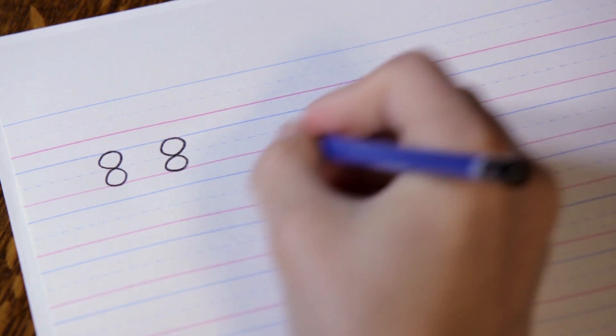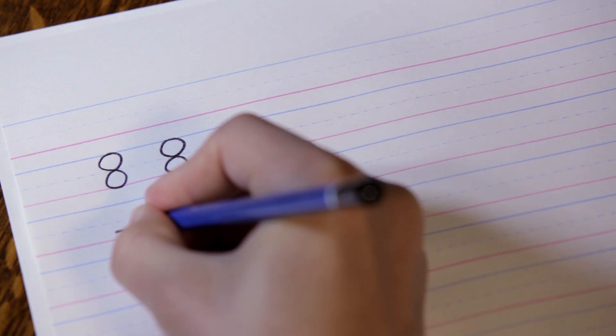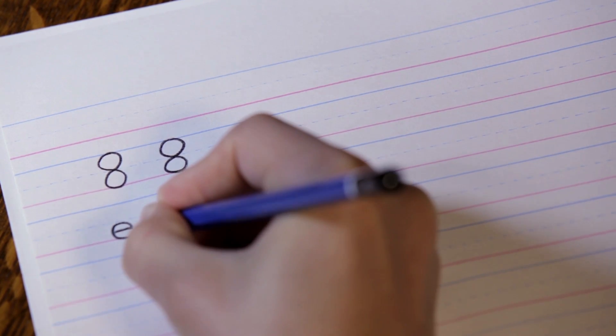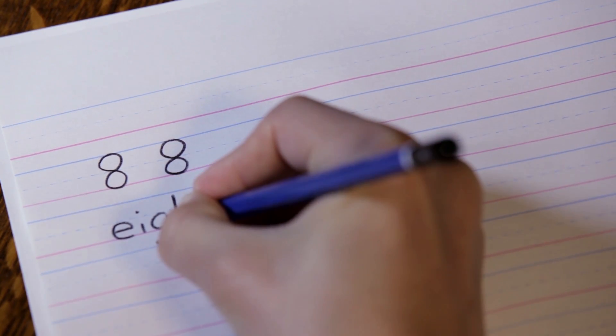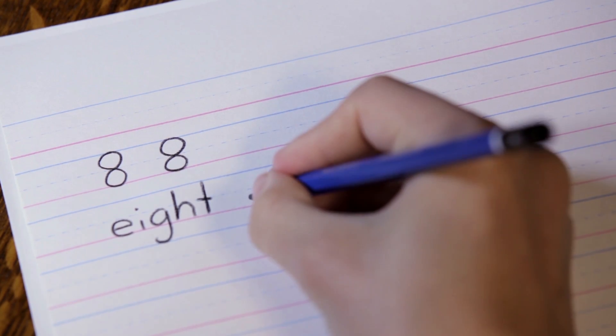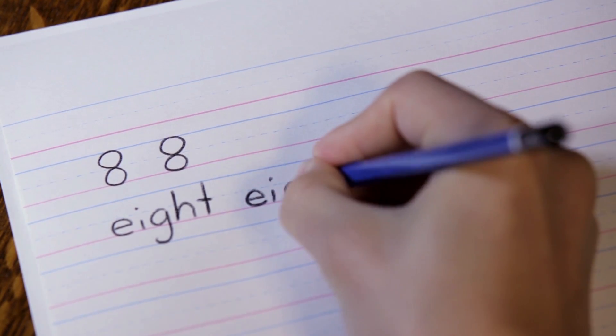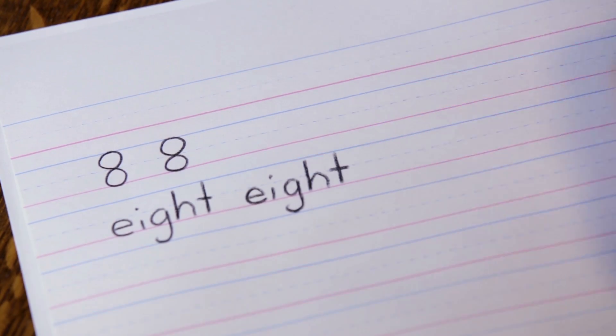Let's look at how to write the word eight. We spell it like this: E, I, G, H, T. Eight. One more time. E, I, G, H, T. Eight.